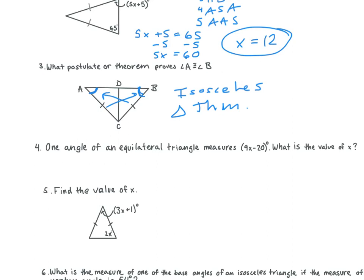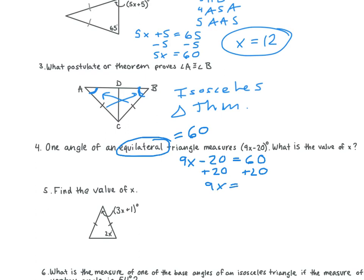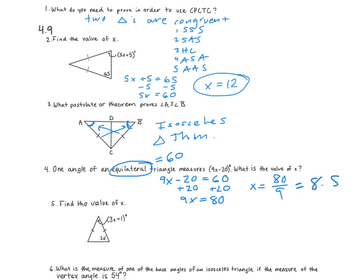Number four. One angle of an equilateral triangle measures 9X minus 20. What is the value of X? Since it's an equilateral triangle, we know that each angle is going to equal 60. So we set 9X minus 20 equal to 60. We get 9X is equal to 80, and X is equal to 80 over 9, which is 8.8 repeating. You can leave it as a fraction.